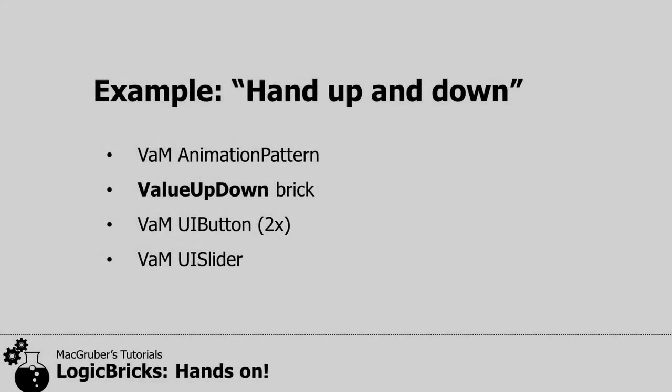As the first example, we want to have a hand that's moving up and down. On YouTube we can't do any explicit stuff, so I leave that to the imagination. We're only going to use an animation pattern for the hand animation — this could also be a sit-up with the timeline plugin, idle pose, or something else. Then we're going to use a value up-down brick to control that animation pattern, and then two buttons and a slider to control that brick.